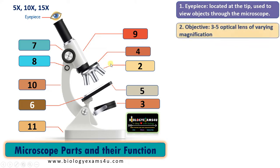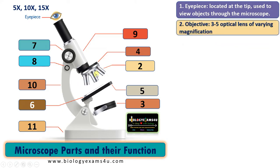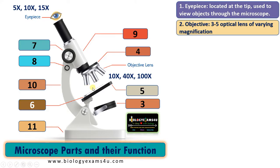The second part is the objective. It's made up of three to five optical lenses of varying magnification — magnification may be 10x, 40x, or 100x. It is very easy to calculate the magnification of an object under the microscope. Suppose we have placed a specimen on the stage and are viewing using a 5x eyepiece and 10x objective. Then the magnification is the product of the magnification of the eyepiece and objective — that means 5x into 10x, which is 50x magnification.